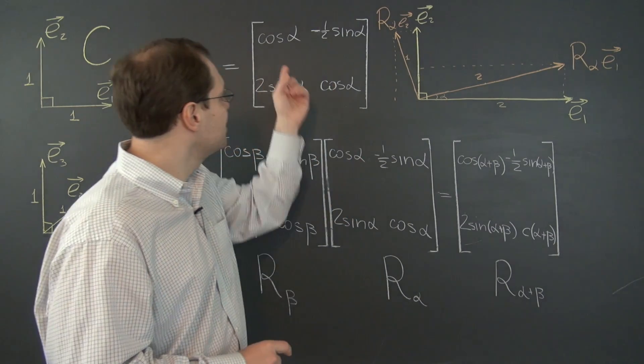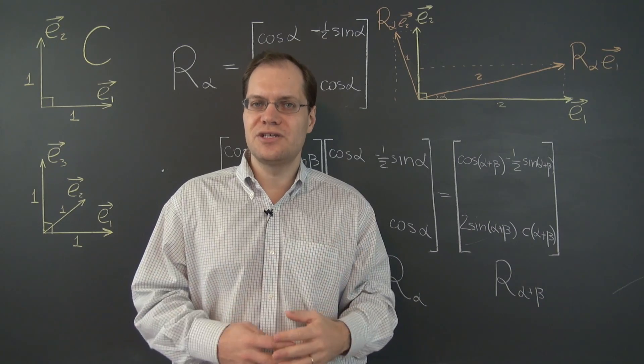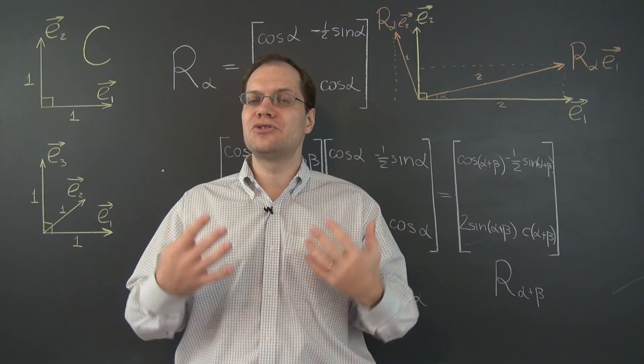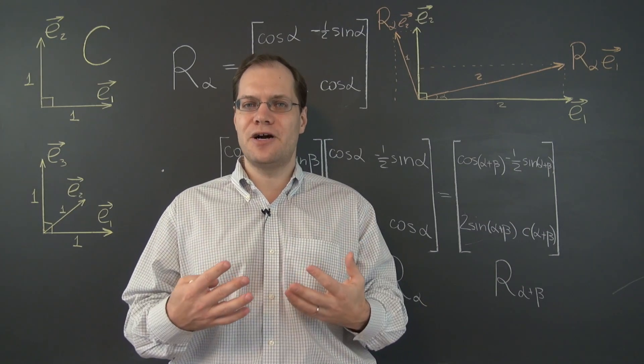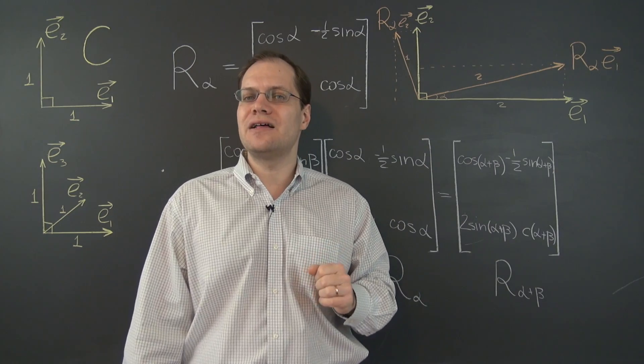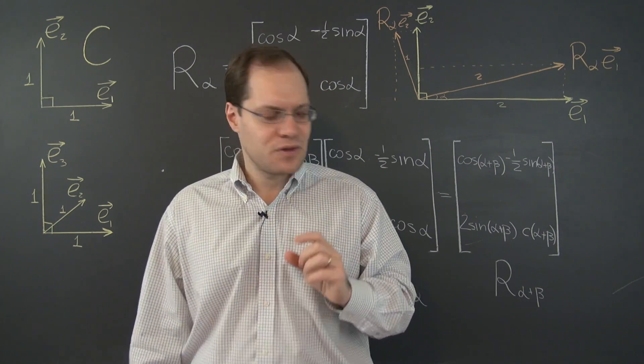And the trace is, once again, 2 cosine alpha as before. So the trace is unchanged. The determinant is unchanged. And therefore, the eigenvalue characteristic is unchanged. We could repeat the same argument to confirm that this matrix doesn't have any real eigenvalues unless alpha is a multiple of pi.